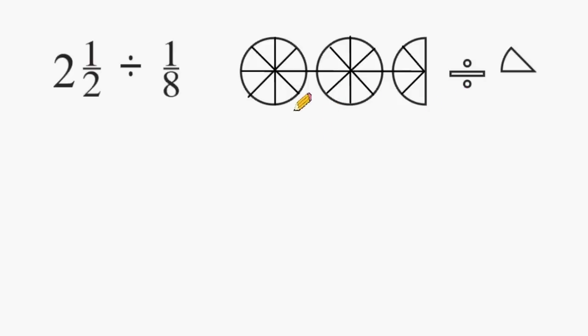So now that we have taken 2 1⁄2 circles and divided them into eighths, let's count how many of these smaller pieces can fit inside 2 1⁄2. So we have one of those pieces,